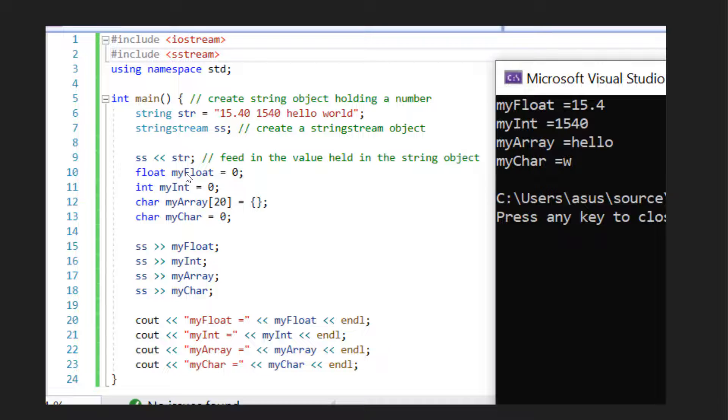Then we have our variable setup. So we've got a float, an integer, an array which is restricted to 20 elements, and then we've got a character as well.